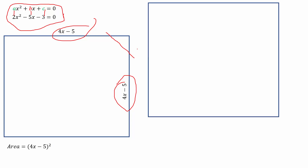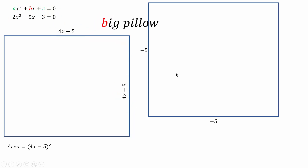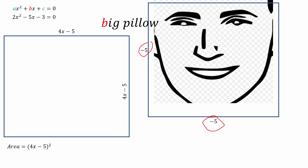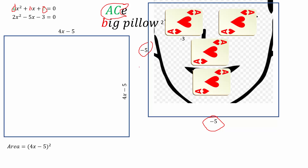The robber finds the man sleeping on a big pillow. I call it the 'big pillow' so you can remember B — which represents this b value — so b equals minus 5, meaning the size of the square pillow is minus 5. The robber uses four ace cards to close the eyes, nose, and mouth. Getting 'ace' gives us the letters A and C, representing the values a and c — so the ace card is a rectangle with dimensions a and c, where a = 2 and c = −3.